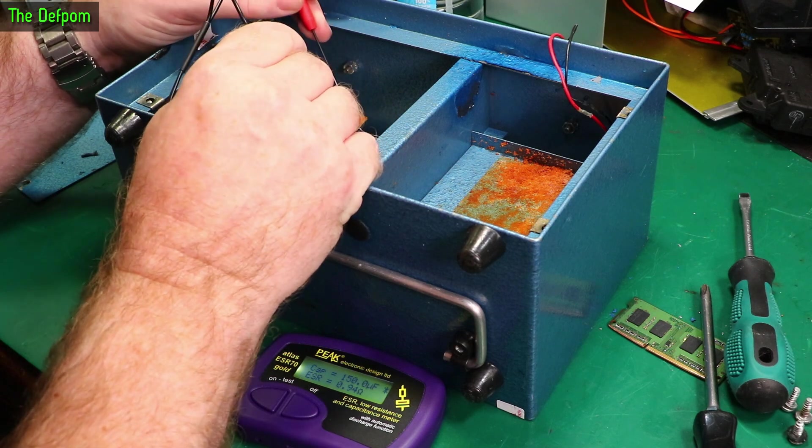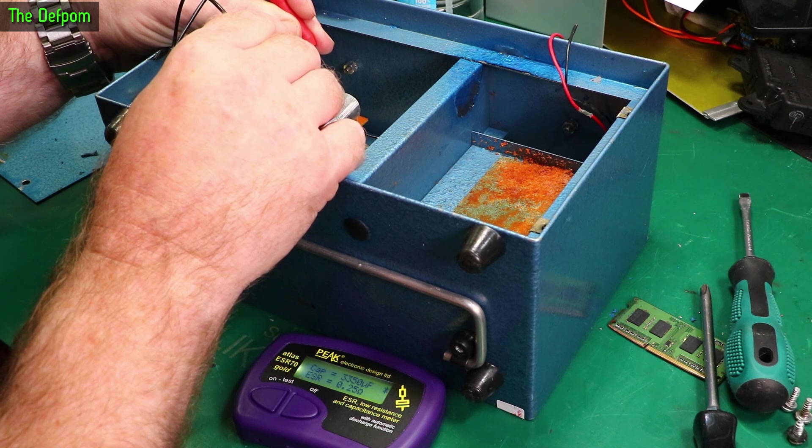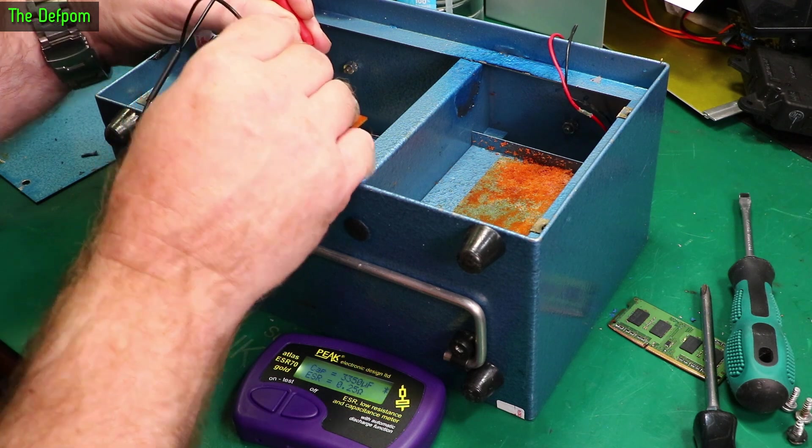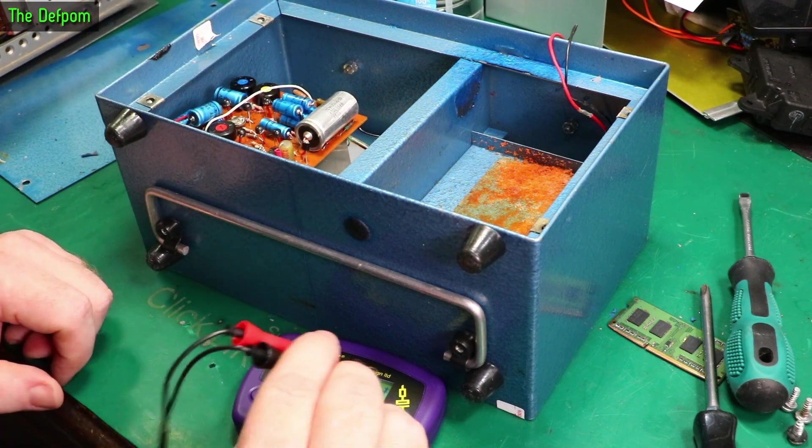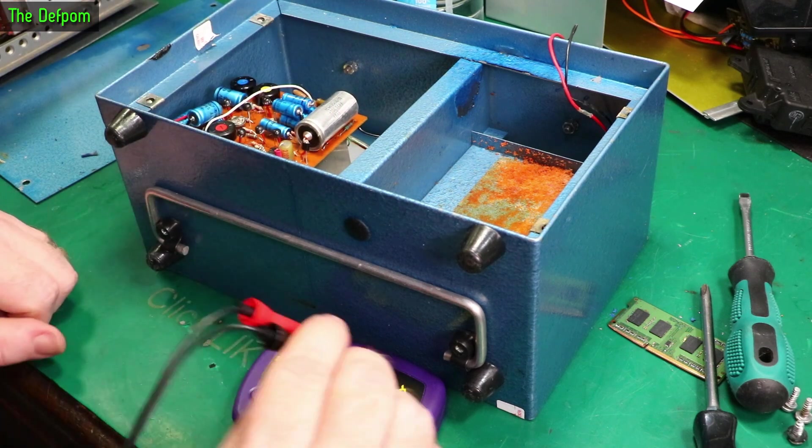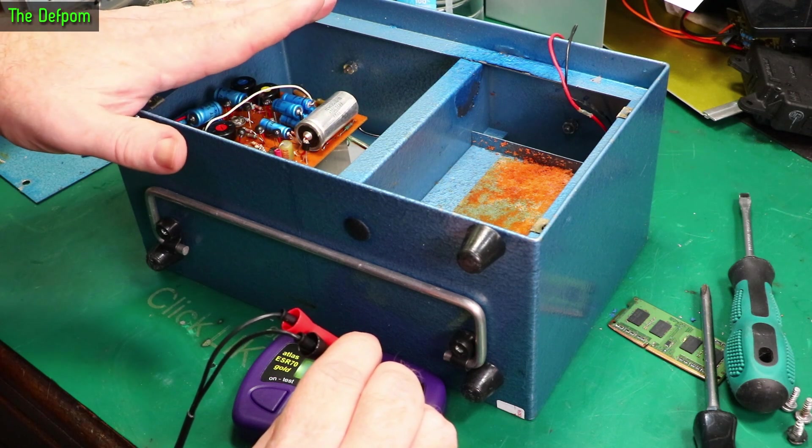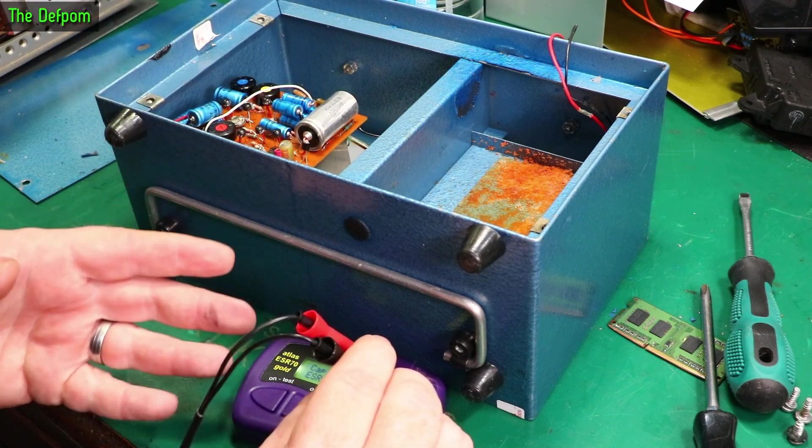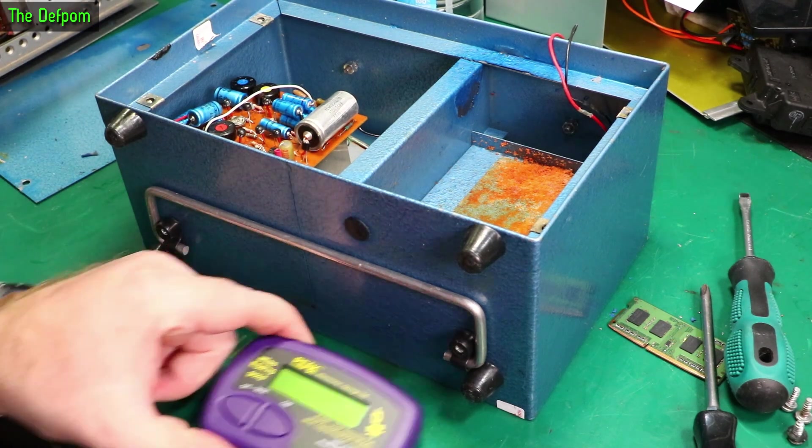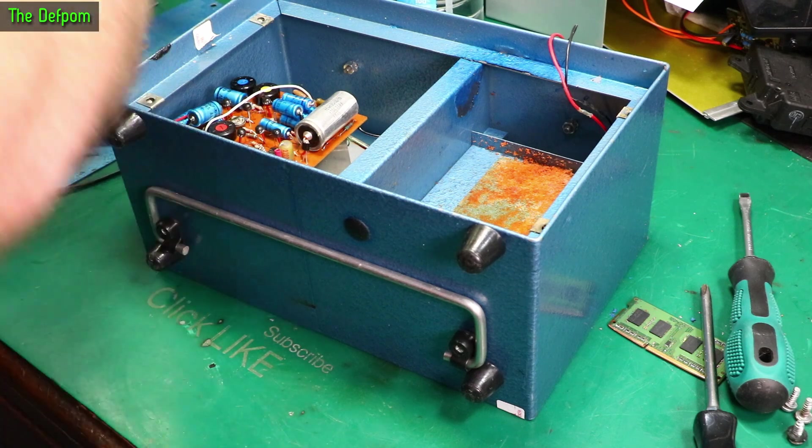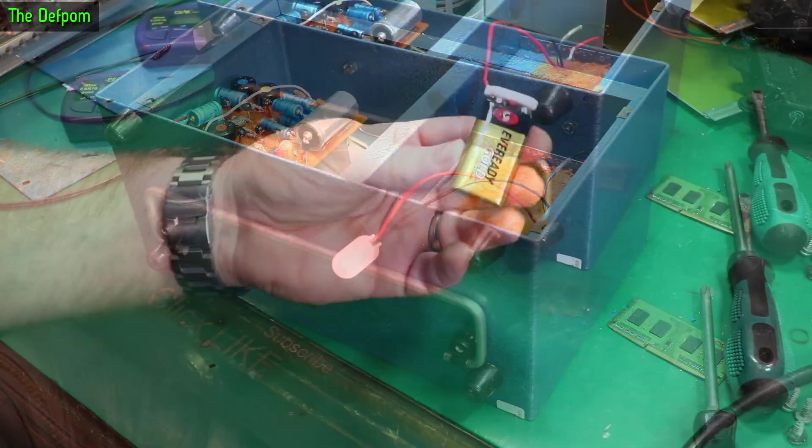Testing more capacitors - they're all looking reasonable really, surprised. They're all a bit on the high side, which is a sign of them being old. The resistances look okay apart from a couple. It probably does need recapping, but initially we'll just try powering it up with a 9 volt battery and see what happens.